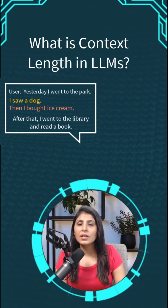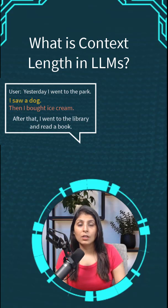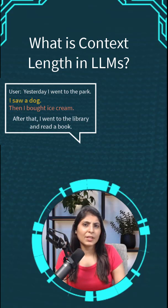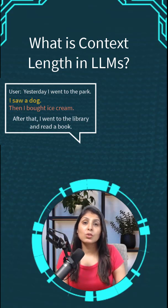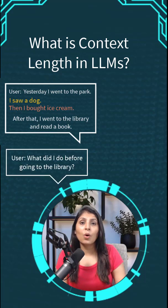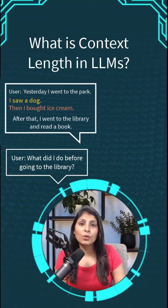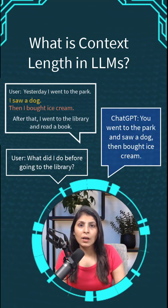So ChatGPT can easily remember all the details like the park, dog, ice cream, and the library. So if you ask it later, what did I do before going to the library, then ChatGPT can answer correctly that you went to the park, you saw a dog, and then you bought some ice cream.